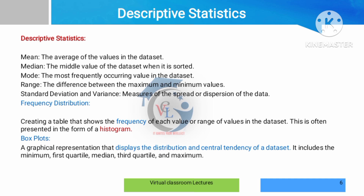Mean value is the average of all values in the dataset — for example, the average of all heights. Median value is the middle value of the dataset; if there are 10 values, the middle value is the 5th or 6th. Mode is the most frequently occurring value in the dataset. For categorical values such as yes or no, mode is the most common answer.